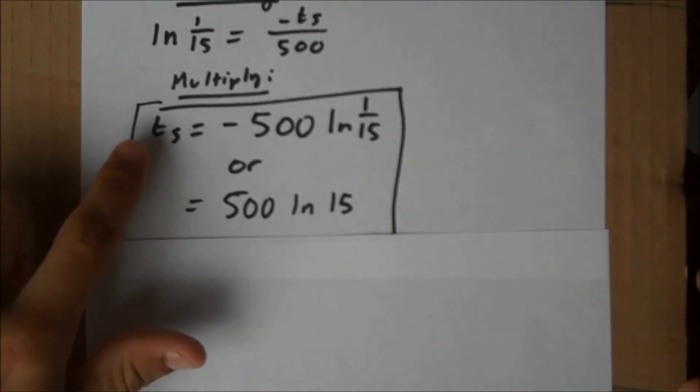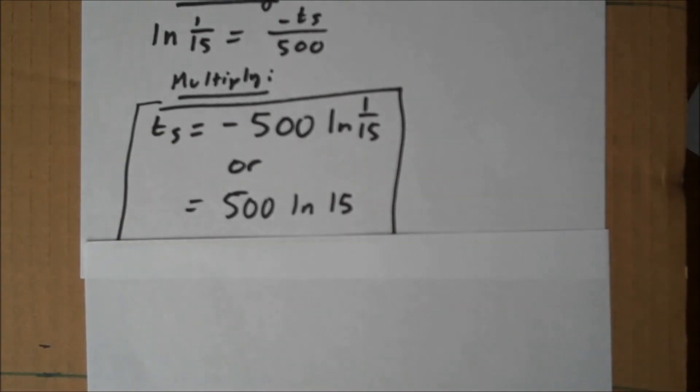So, what we've just found, ts, is the time when the velocity has decreased all the way to 2 meters per second and Cletus can stop the bulldozer. Thank you for watching.